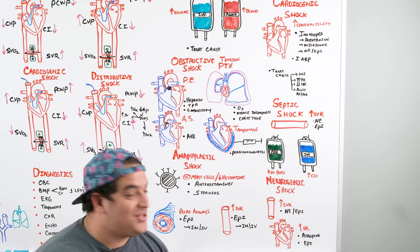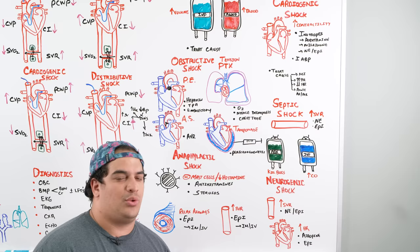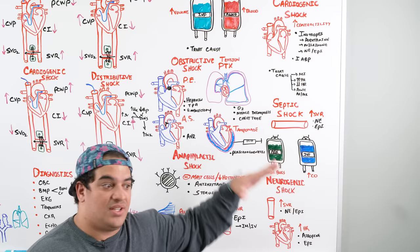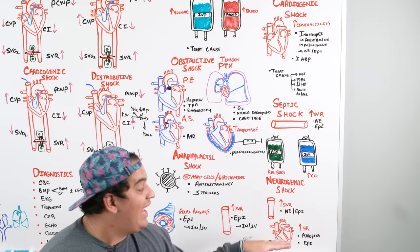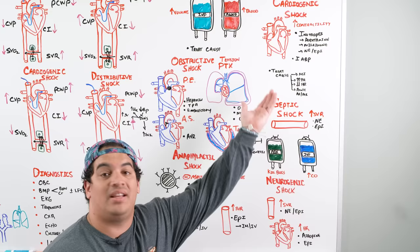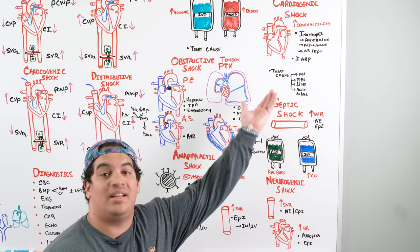Treatment of neurogenic shock: address the spinal cord injury if possible. Give norepinephrine or epinephrine to increase SVR (counteract vasodilation). Give atropine or epinephrine to increase heart rate and counteract the bradycardia from loss of sympathetic tone.